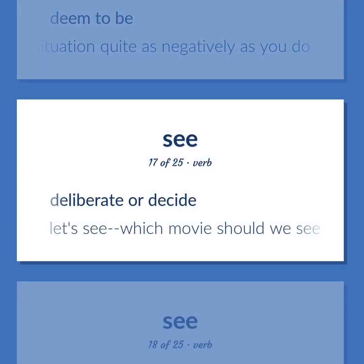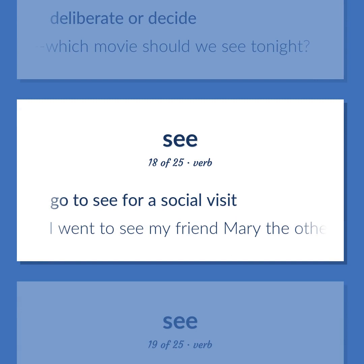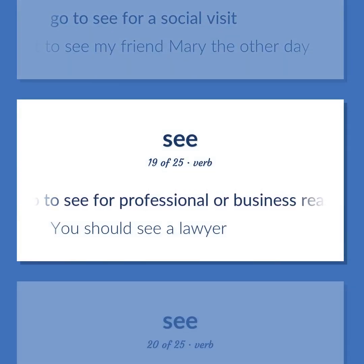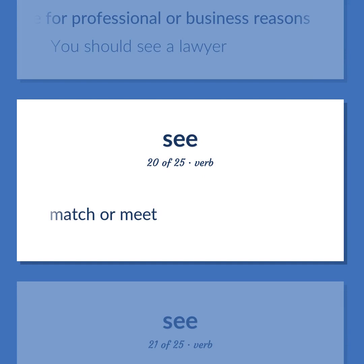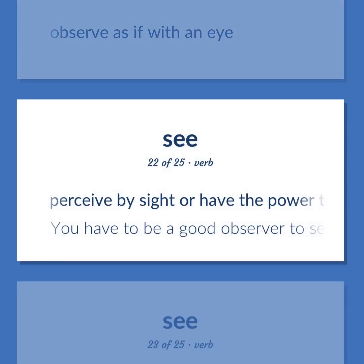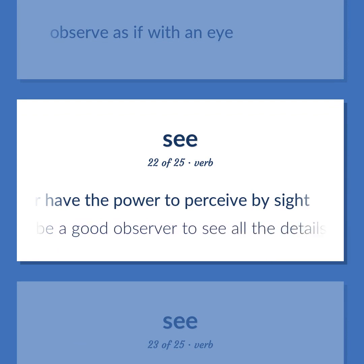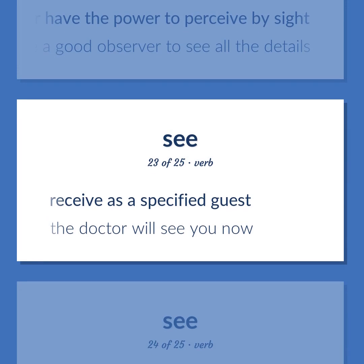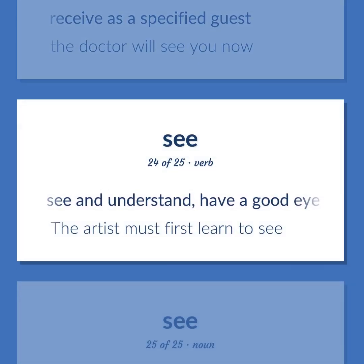See: Deliberate or decide — 'Let's see, which movie should we see tonight?' Go to see for a social visit — 'I went to see my friend Mary the other day.' Go to see for professional or business reasons — 'You should see a lawyer.' Match or meet. Observe as if with an eye. Perceive by sight or have the power to perceive by sight — 'You have to be a good observer to see all the details.' Receive as a specified guest — 'The doctor will see you now.' See and understand, have a good eye — 'The artist must first learn to see.'